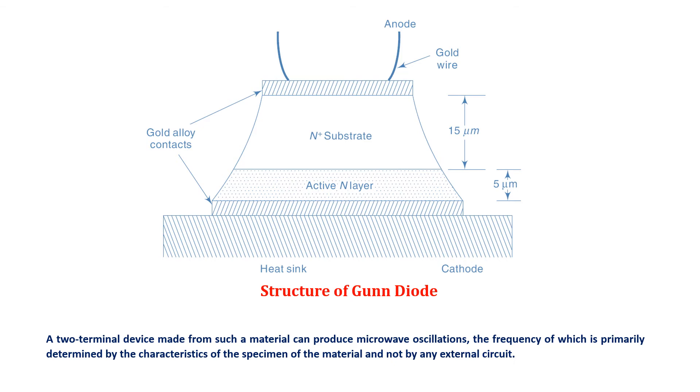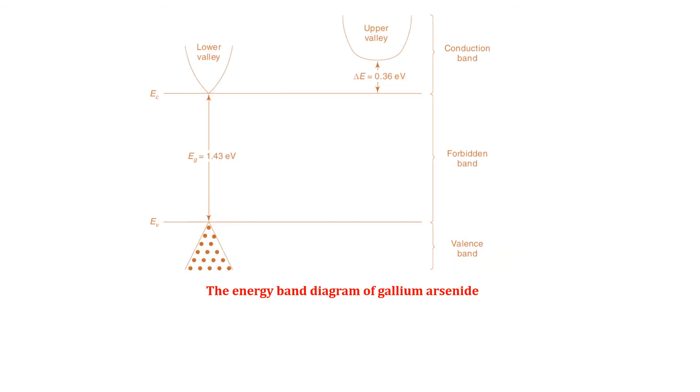The frequency of these microwave oscillations is primarily determined by the characteristics of the specimen of the material and not by any external circuit. The energy band diagram of gallium arsenide is shown in the figure.